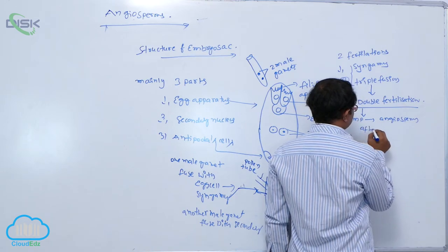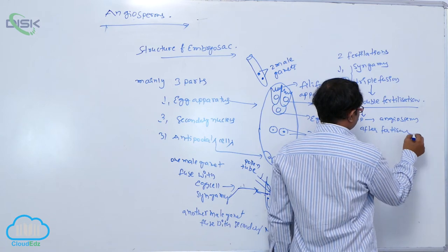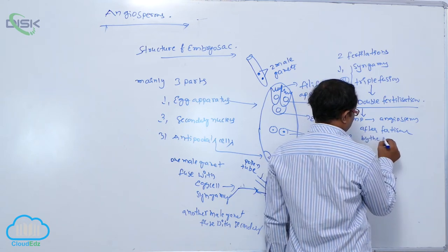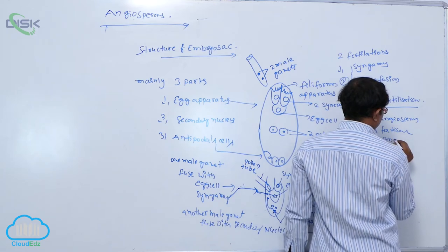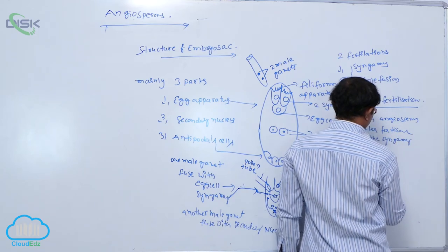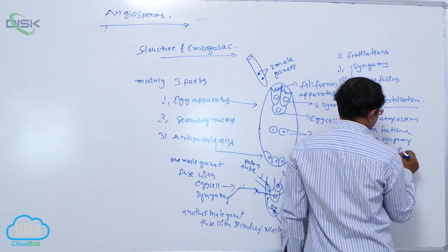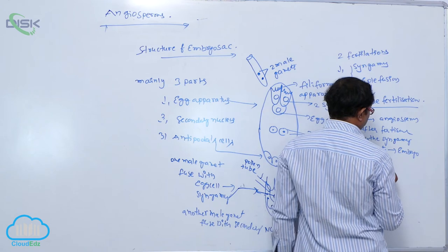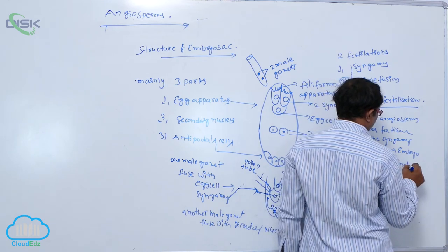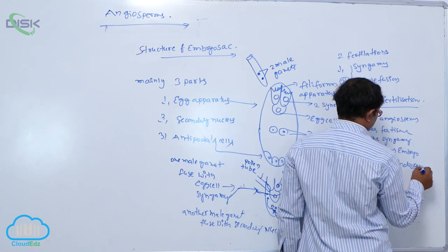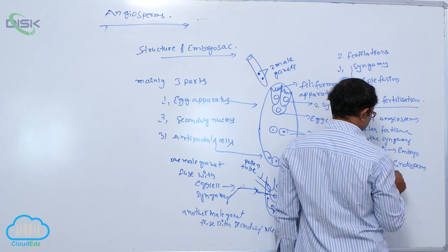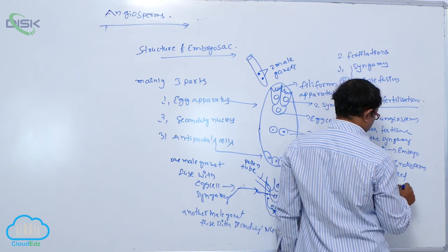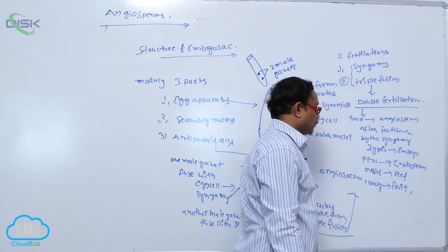After fertilization, by syngamy or fertilization, zygote is formed. The zygote is converted into the embryo. By triple fusion, primary endosperm nucleus is formed. This primary endosperm nucleus is converted into the endosperm. Ovules are converted into the seed. Ovary is converted into the fruit. These are some post-fertilization changes.